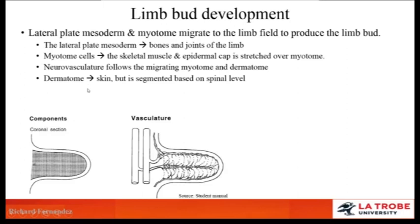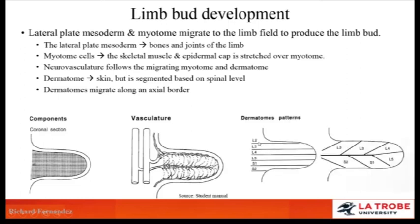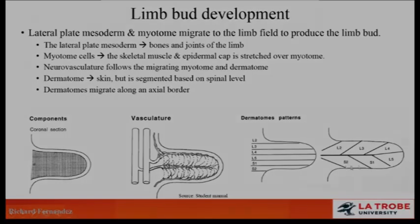The dermatome, which becomes skin, is segmented based on spinal levels. These dermatomes tend to migrate along the limb bud along a pre-axial border and return to the body via a post-axial border. We can see the segmental levels of the dermatomes — L2, L3, L4 — migrating to the periphery along the pre-axial border and coming back along the post-axial border.